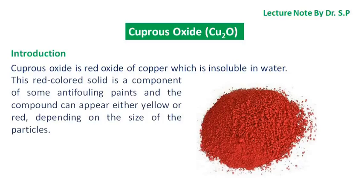In this tutorial we will discuss cuprous oxide. Cuprous oxide is a red oxide of copper which is insoluble in water. This red colored solid is a component of some anti-fouling paints and the compound can appear either yellow or red, depending on the size of the particles.